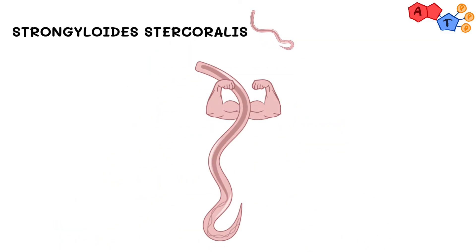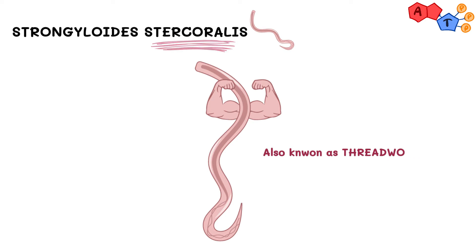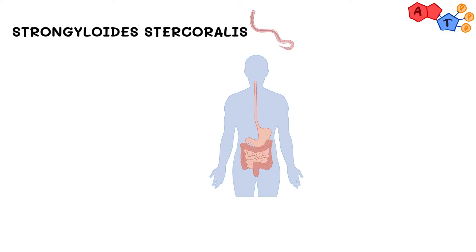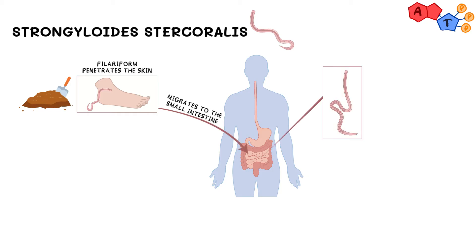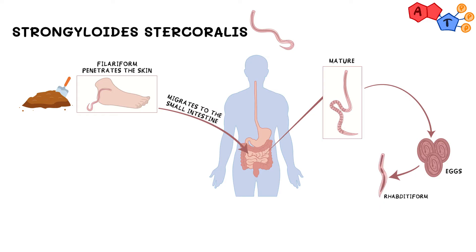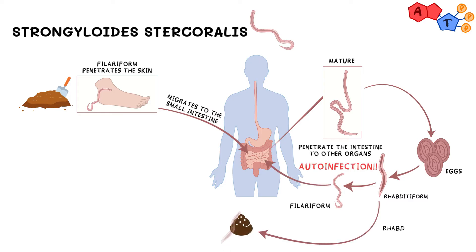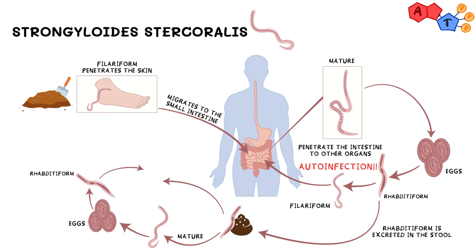The first nematode on the list is Strongyloides stercoralis. It's also known as a threadworm. Strongyloides has many species but Strongyloides stercoralis is the one that commonly affects humans. For its life cycle, similarly to hookworms, it starts from the soil where filariform larvae penetrate the skin and then migrate to the small intestine where they mature. The adult worm produces eggs that develop into the next stage which is the rhabditiform form. These can either develop into filariform larvae and reinfect humans, or get excreted into the stool to form either adults and eggs, or mature into filariform larvae and the cycle continues.